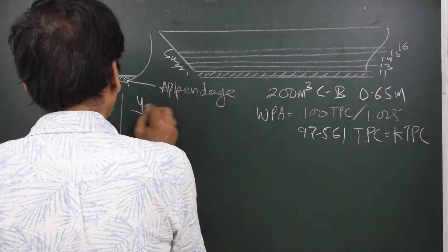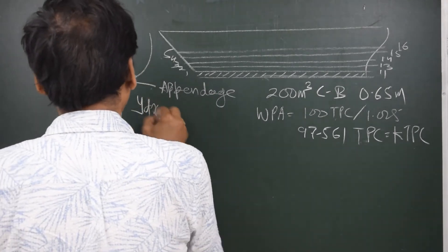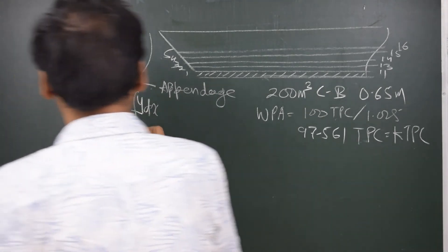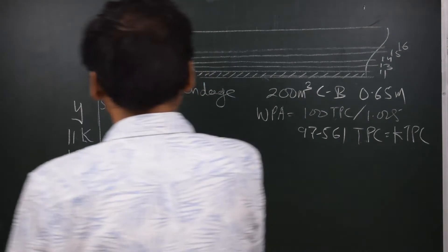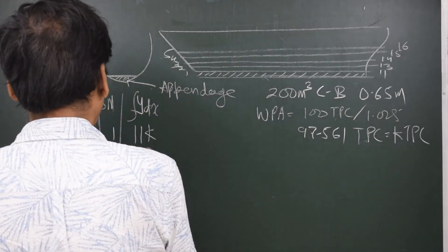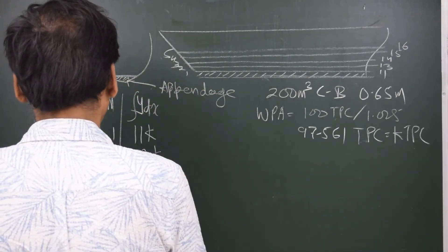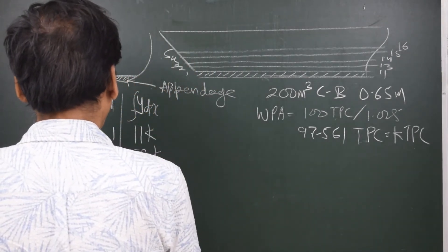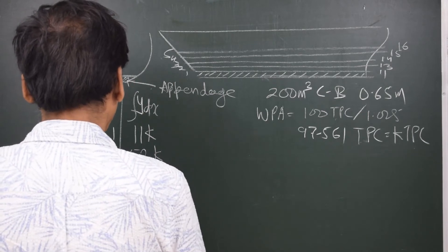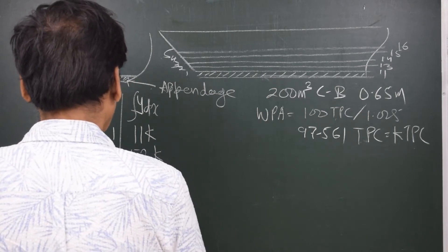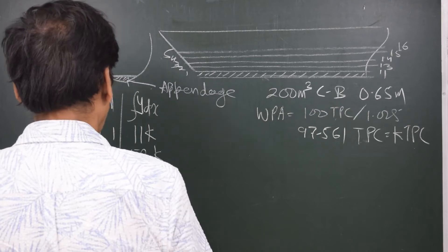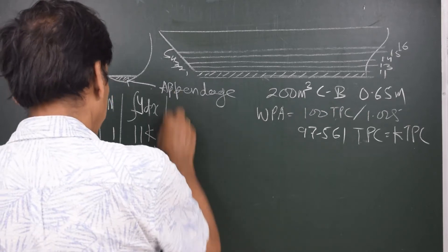The third column is YDX, the product of the first two columns — the ordinates and Simpson's multipliers. So we get 11K, 52K, 28K, 60K, and 16K, giving a total of 167K.